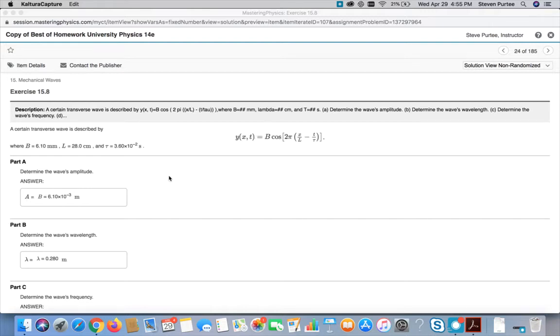So the amplitude here is the b they give us, 6 millimeters. Of course we want that in SI units. Wavelength is what they called L here, 28 centimeters.